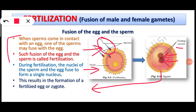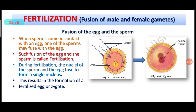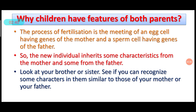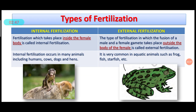Here are certain notes you can write in your copy. This also includes the previous question: find animals in which fusion of male and female gametes takes place outside the body. Those animals are frog, fish, and starfish, among many other examples.